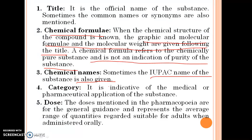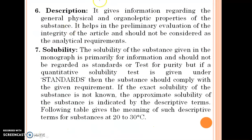Chemical names: sometimes the IUPAC name of the substance is also given. Category is indicative of the medical or pharmaceutical application of the substance. The doses mentioned in the pharmacopoeia are for general guidance and represent the average range of quantities regarded as suitable for adults when administered orally.